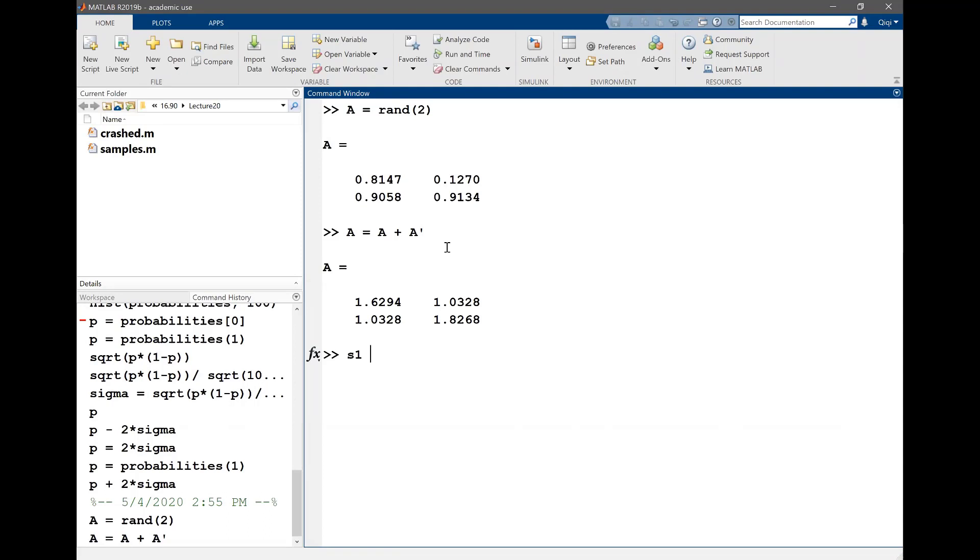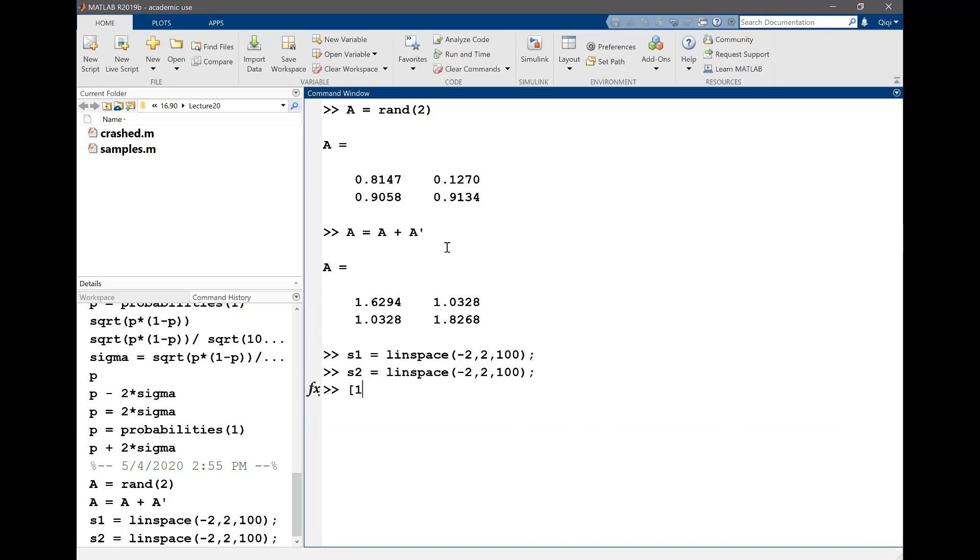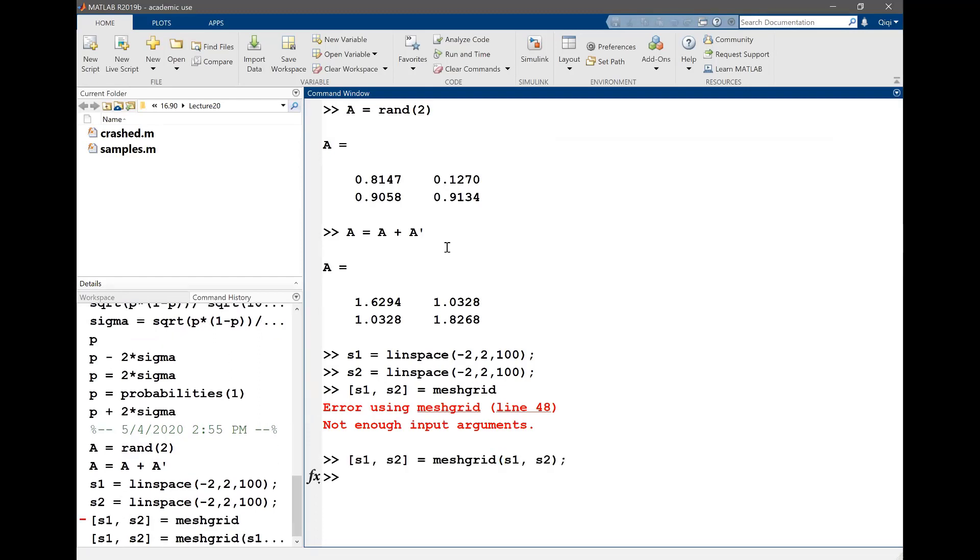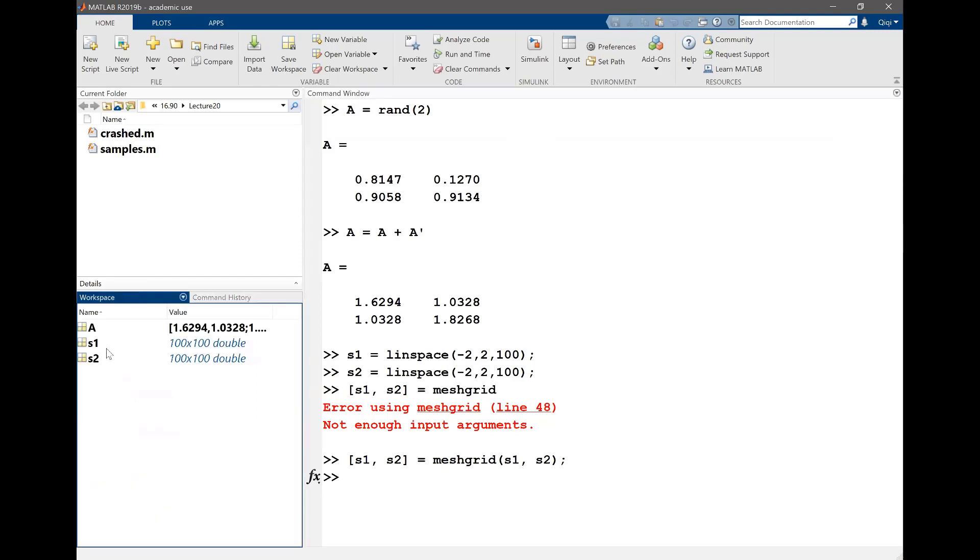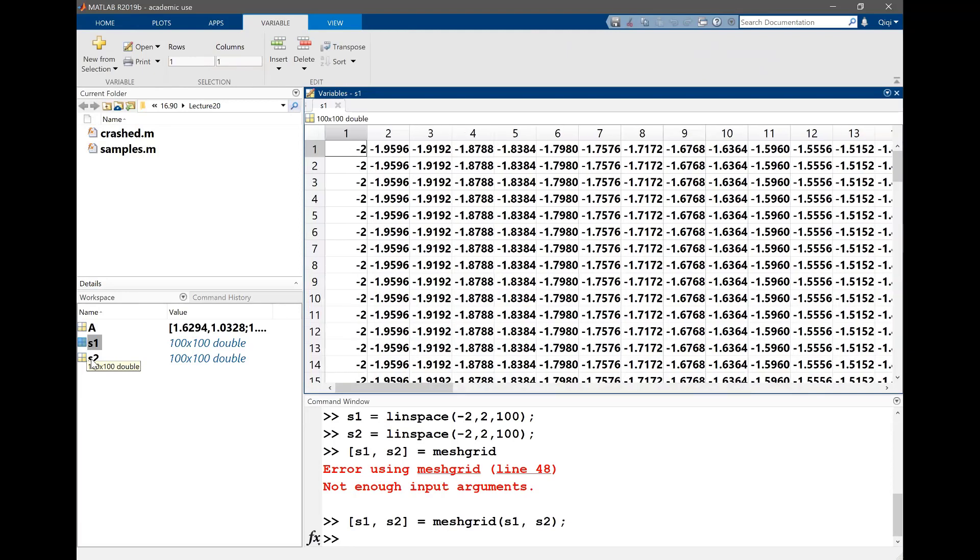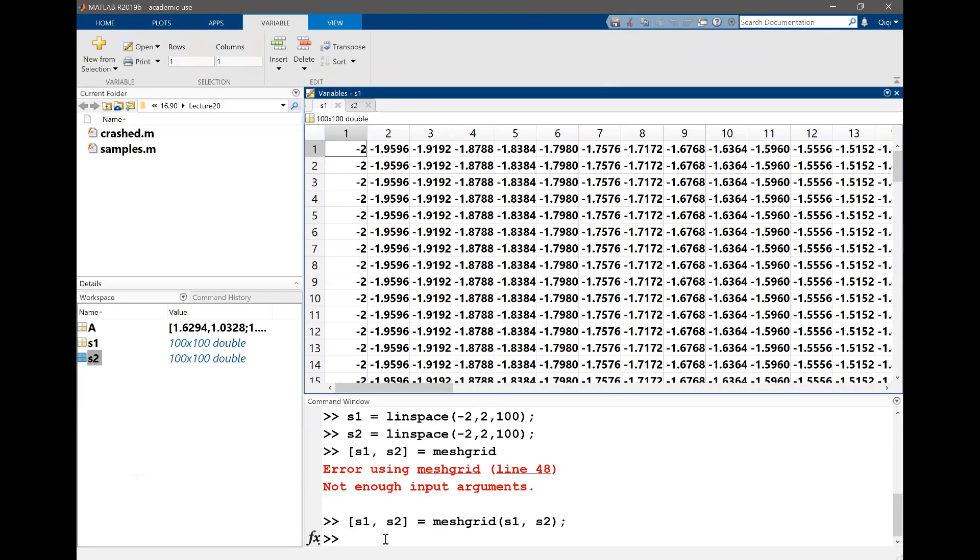So let me say S1 is equal to linspace from minus 2 to 2, let's take 100 points. And let S2 to be the same. And S1, S2 is equal to meshgrid of S1 and S2. We get 100 by 100 being S1 and another 100 by 100 equal to S2. So that gives us the whole space of minus 2 to 2, but S1 varies in one direction and S2 varies in the other direction.